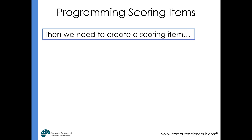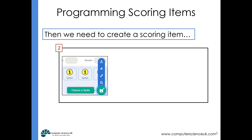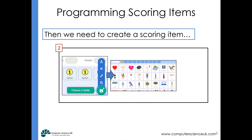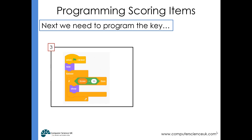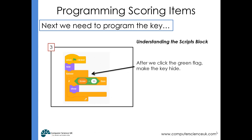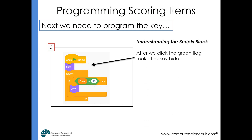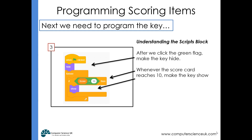The next thing we need to do is create this end-of-level item. I'm going to choose a sprite — specifically a key from the ready-made ones. I'm then going to program the key to be hidden when we start the game. When the green flag is clicked, I program it to hide right at the start. Then the program constantly checks the score, and the moment the score is 10, the key is shown — appearing after 10 items are collected.